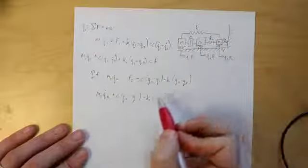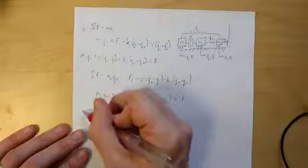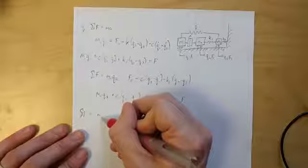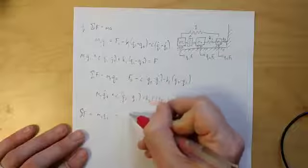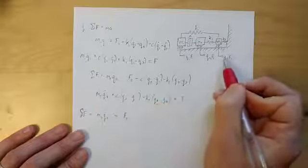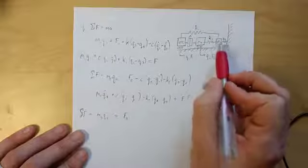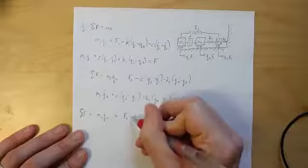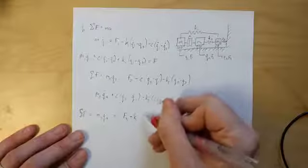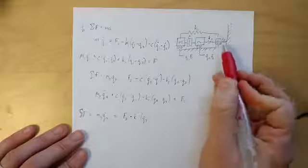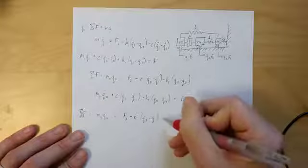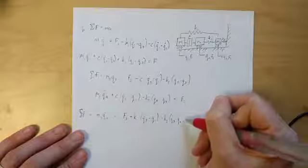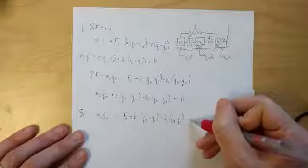And so on and so forth, for our third equation of motion, sum of the forces on mass 3 is M3 Q3 double dot, which is equal to F3. Again, positive force. Everything else resists that. So K1, K2, and K3 are all resistive forces. We always write our degree of freedom of interest first and then subtract everything from that. So K1 times Q3 minus Q1, K2 times Q3 minus Q2, and finally K3, which would be Q3 minus 0, because our ground is 0, so we can just leave it as Q3.